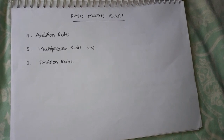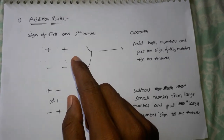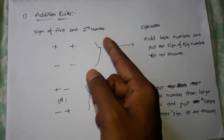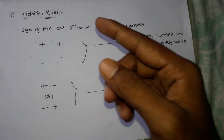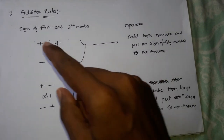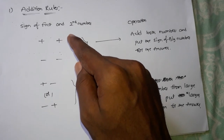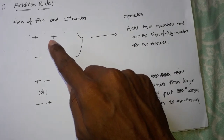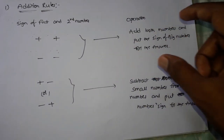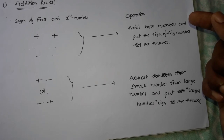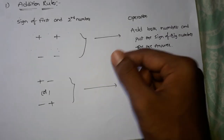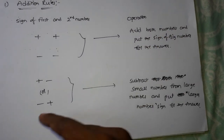Addition rules: when one number has a plus sign and another has a minus sign, and you need to perform addition. When two numbers have the same sign, perform addition — add the two numbers. The sign of the biggest number will be the sign of the answer.